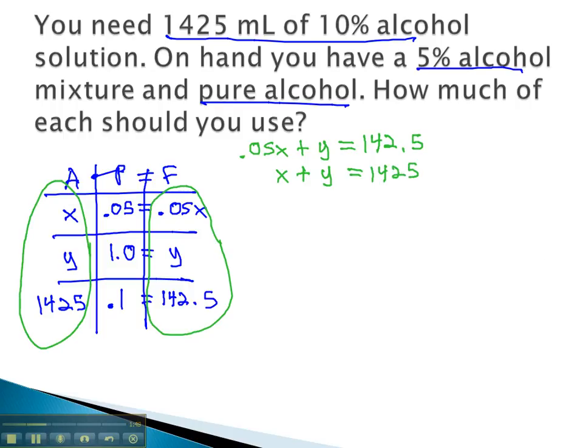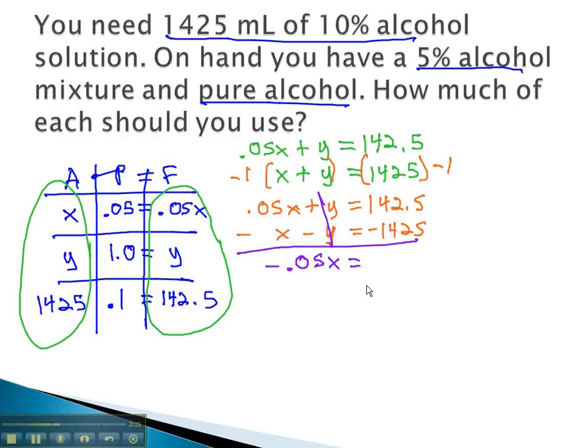This equation we can solve quite quickly by using the addition method and multiplying the second equation by negative 1 to eliminate the y's. The first equation, unchanged, is 0.05x plus y equals 142.5. The second equation: negative x minus y equals negative 1425. When we add those together, the y's eliminate, and we get negative 0.95x equals negative 1282.5.